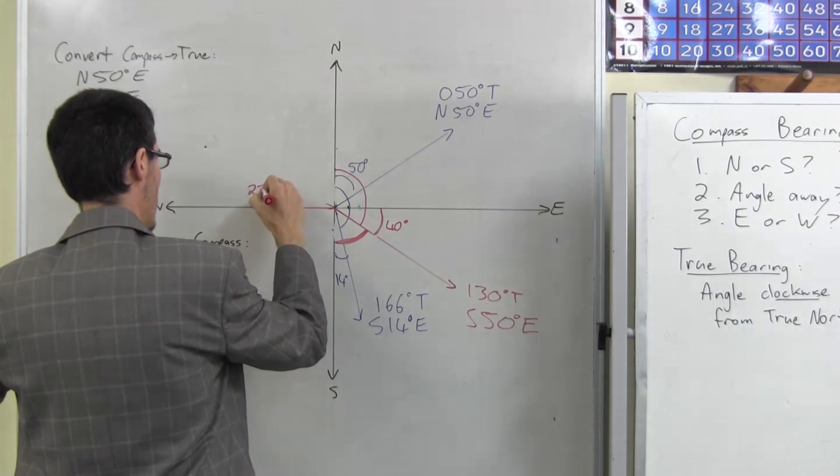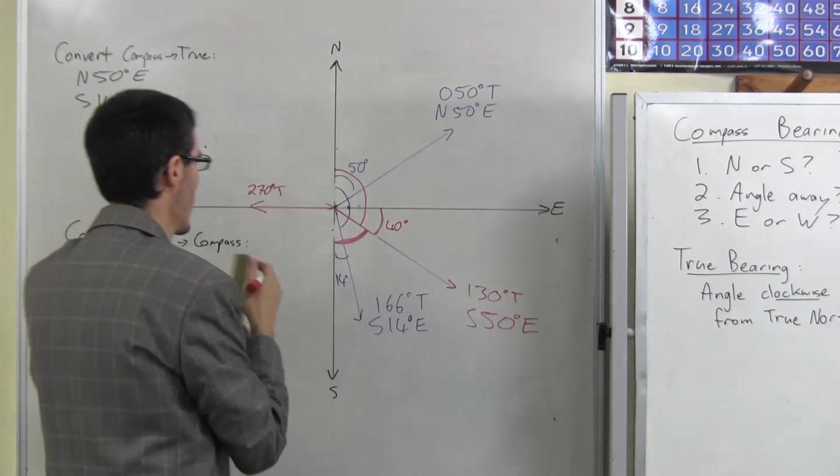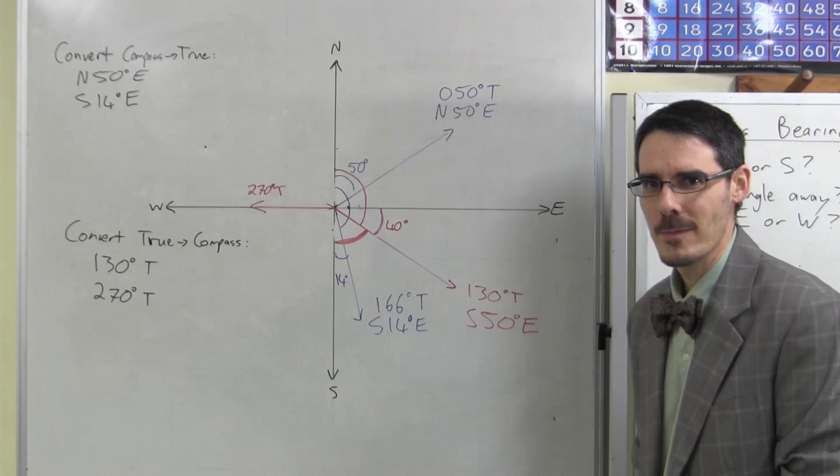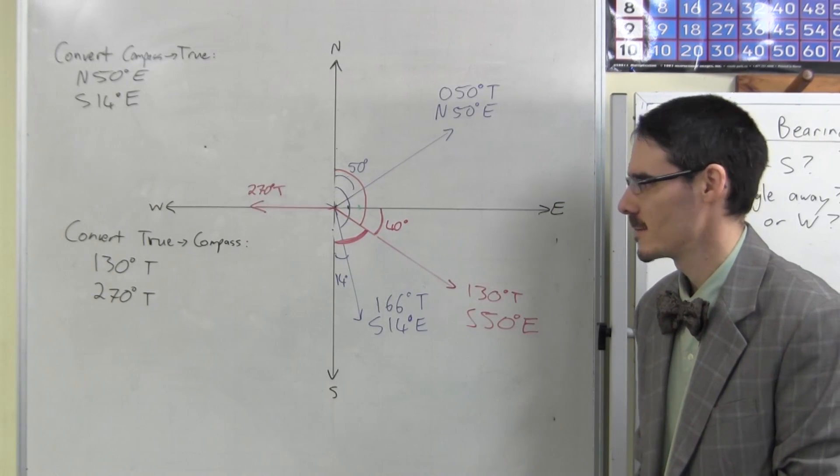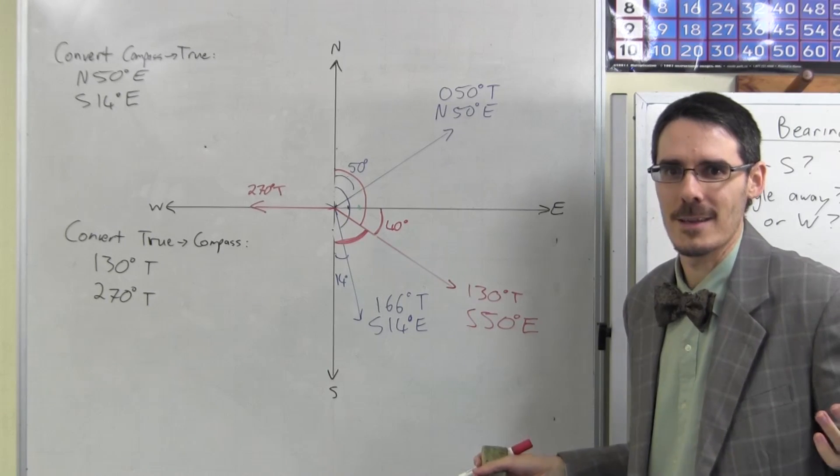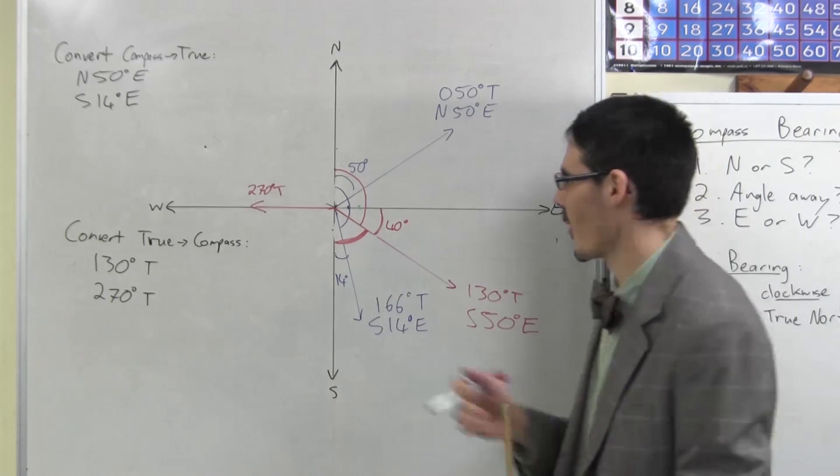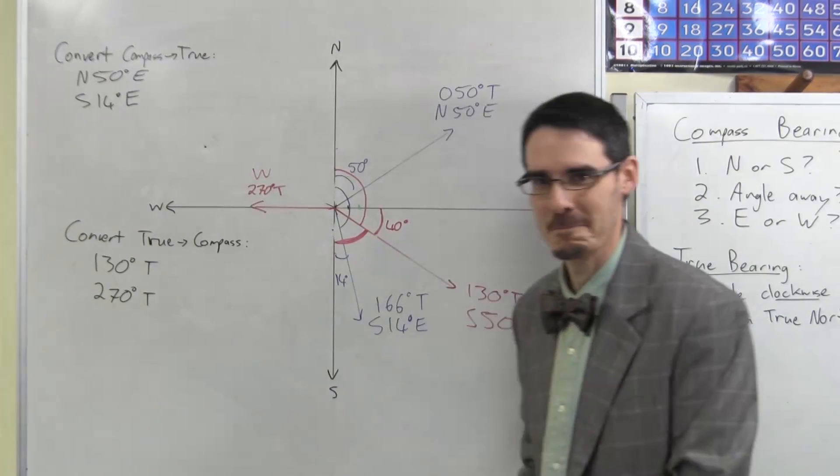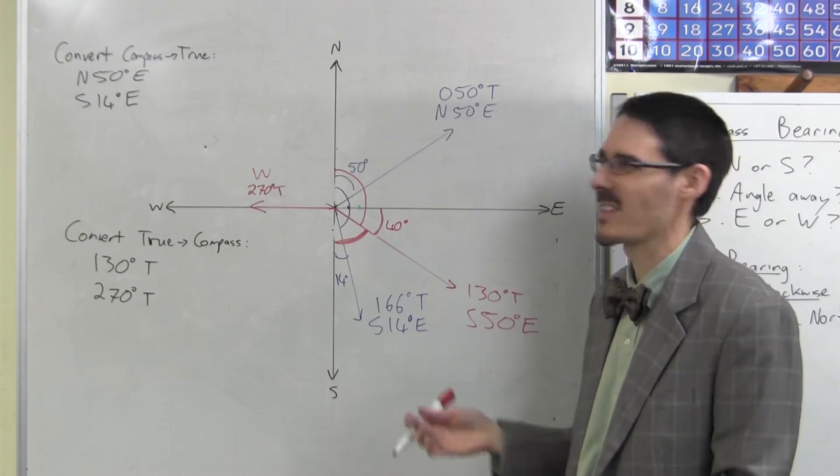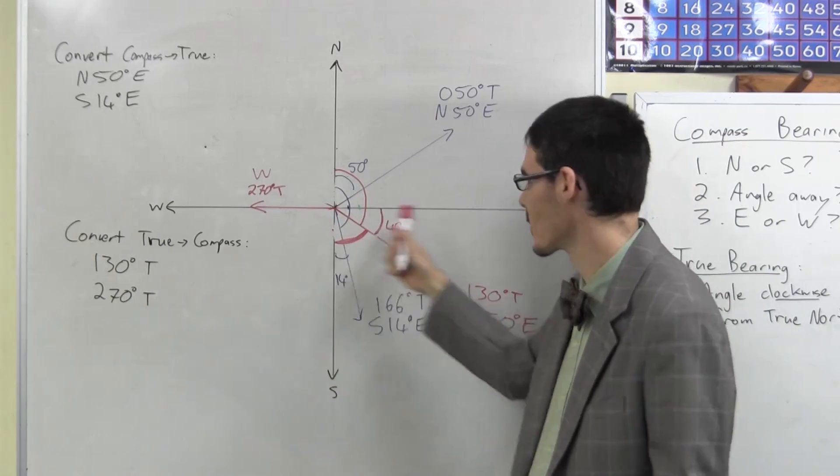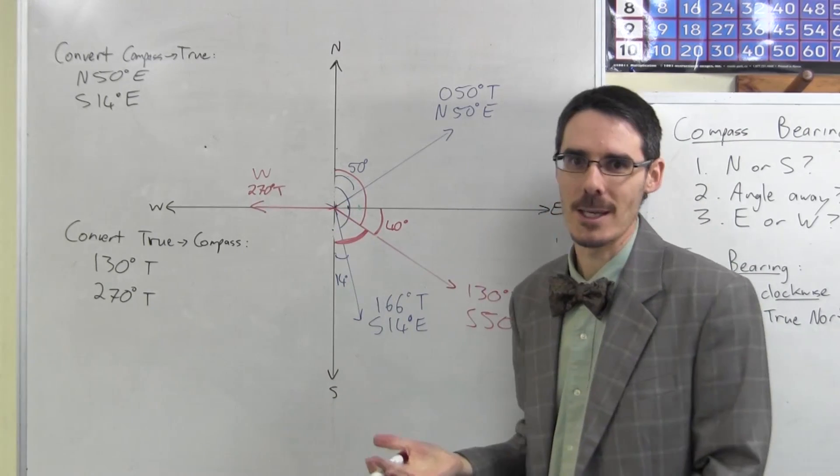270 degrees true. But if it's directly west, I have a problem. Is it north? It's north or south. It's neither. It's directly west. As a compass bearing, we just write west. Because it's neither north nor south. And the same will happen at 90 degrees true for east. You just write east. But all the others you have to write like that.